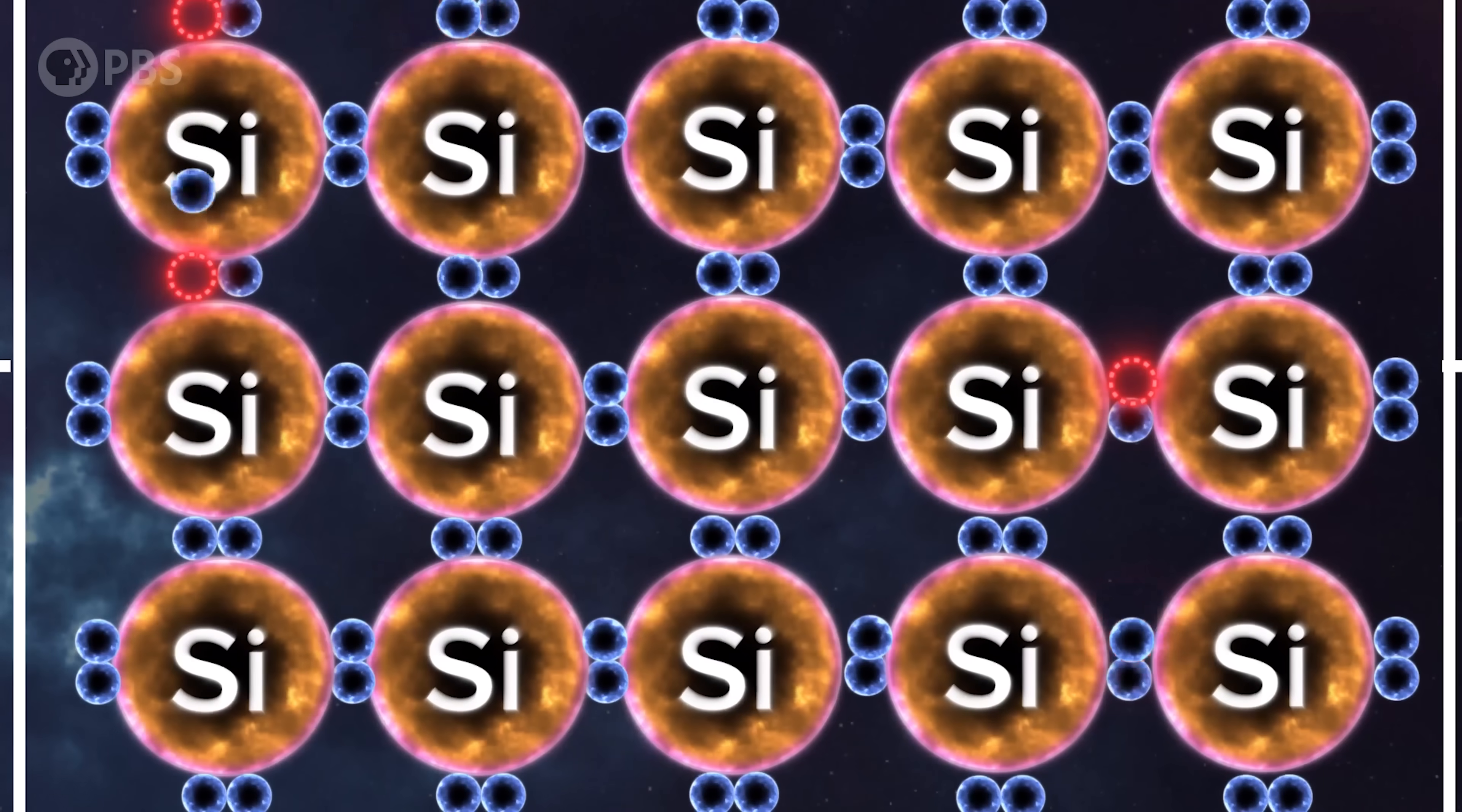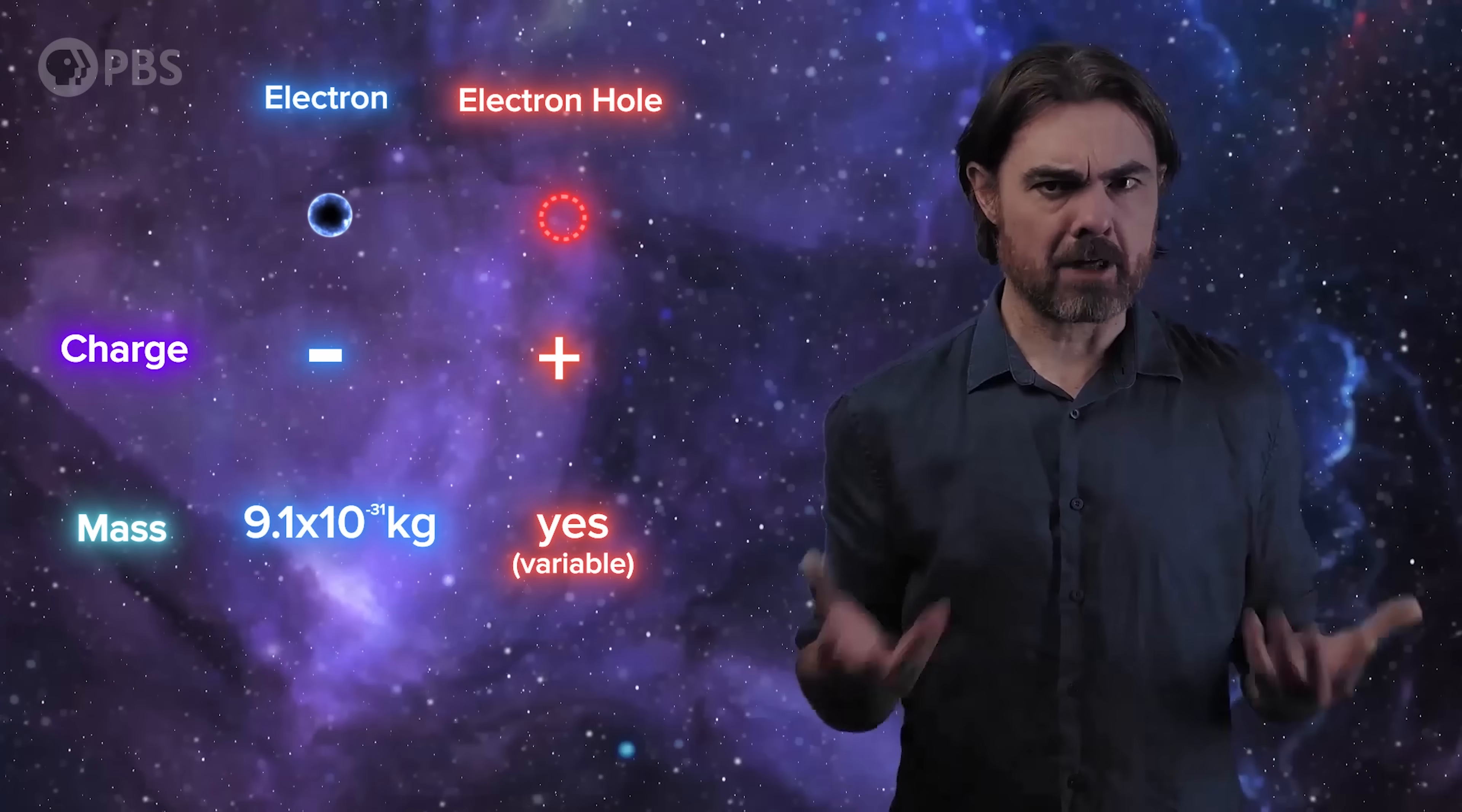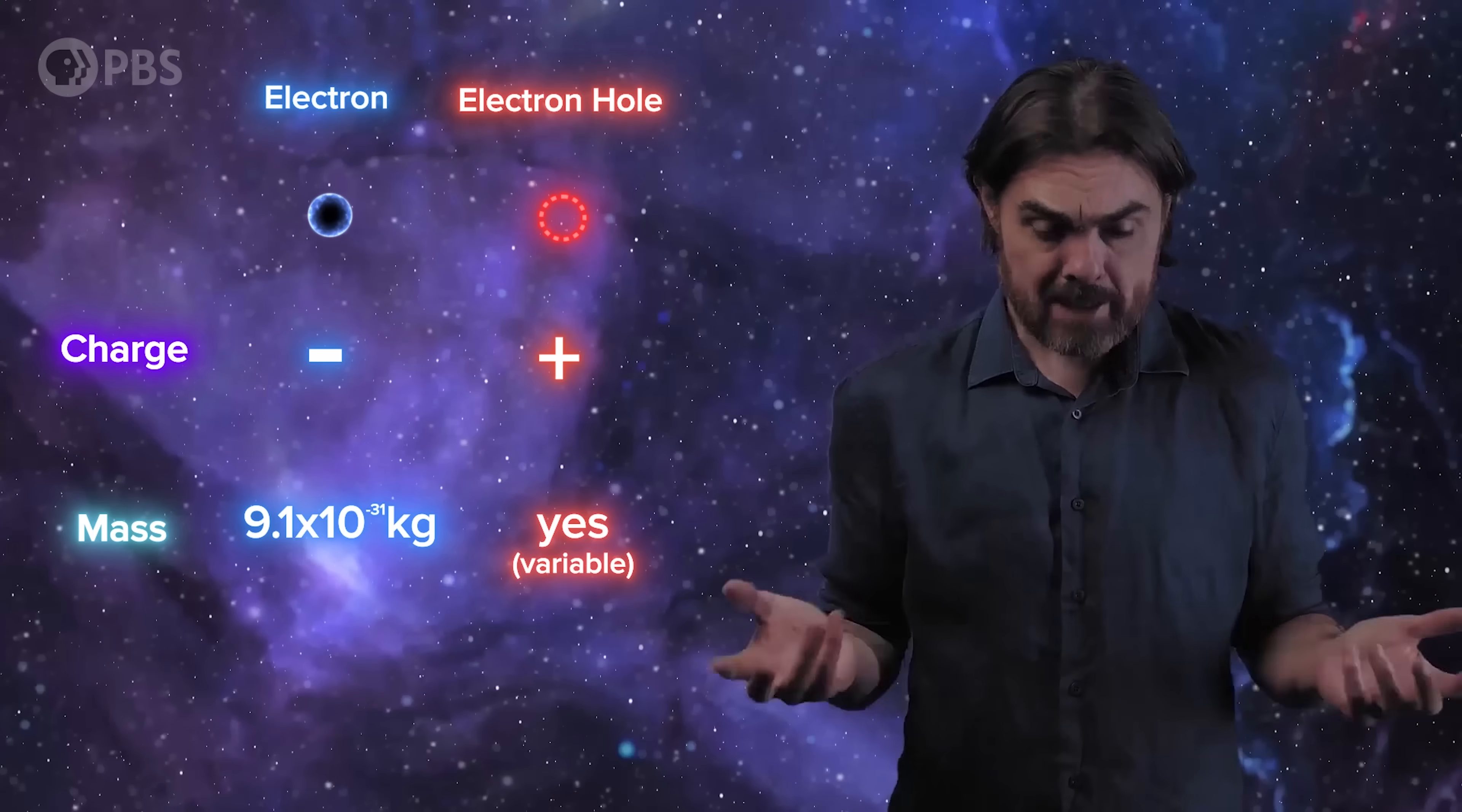It looks like the hole moves around, and under a voltage the hole moves in the opposite direction to the flow of electrons. This is our first quasiparticle. It's an electron hole. It has an effective positive charge due to the charge of the nucleus not being properly cancelled by electrons in that location. It even has an effective positive mass. We can model it as though it's a real particle.